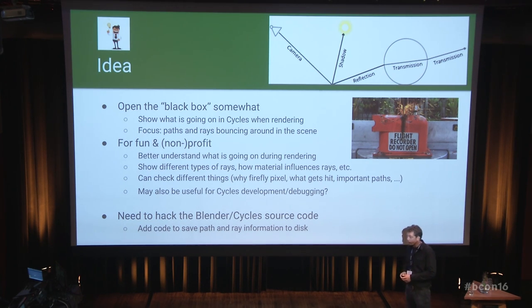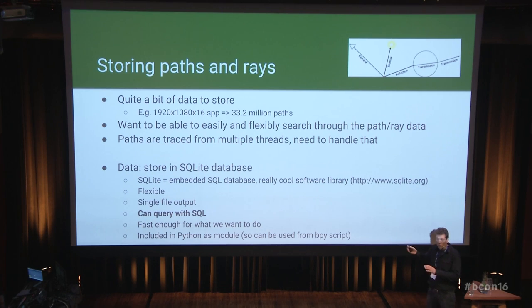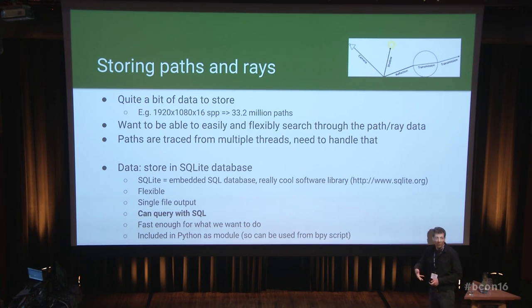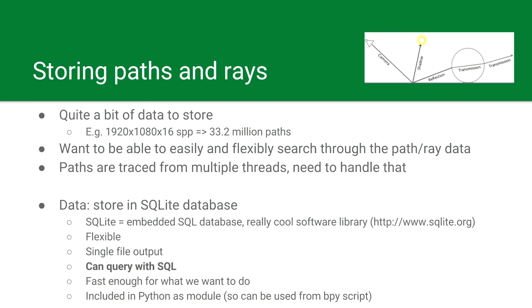The fun thing is we need to hack the Cycles code. We want to add code to save paths and rays to disk and look at them later. We want to be able to explore the data, do queries on it, search for certain types of paths. They also come from multiple render threads, so we need to handle that. The solution I chose was to use something called SQLite — it's basically a relational database like MySQL but in a single file. You can link it to your program and query it with SQL. It comes included with Python, so you can script it from Blender's Python modules.